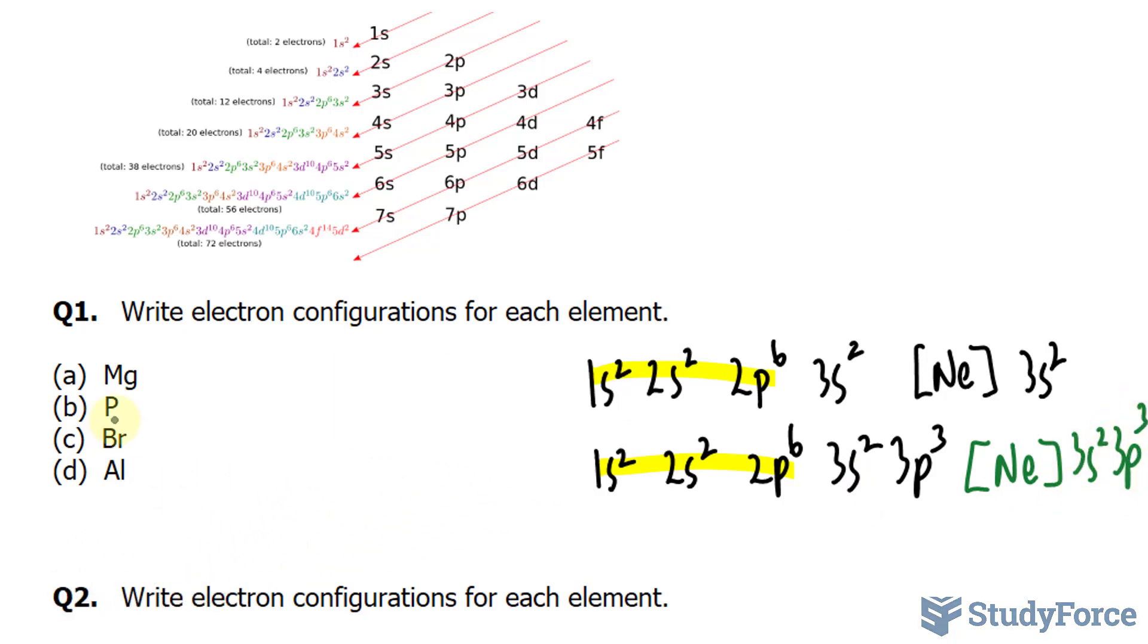Moving on to bromine. Bromine has 35 electrons. We distribute 2 of these into the 1s orbital, 2 into the 2s orbital, 6 into the 2p orbital. So, let's write that down, 1s², 2s², 2p⁶, so far that's 10.